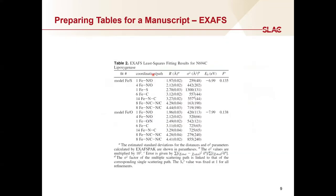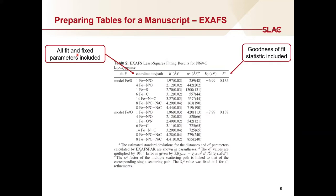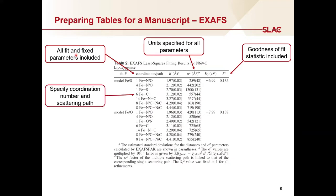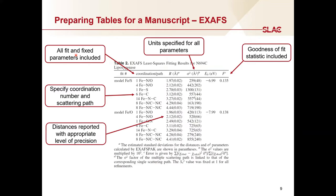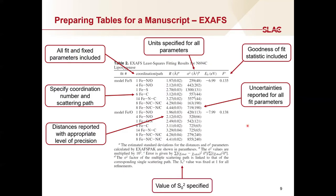To go along with your EXAFS plots, you should include a table of the parameters used to model the data. Your table should include all of the fit and fixed parameters in the model, a goodness of fit statistic, and all parameters should have correct units listed. Both the coordination number and the scattering paths should be specified. Distances are reported with the appropriate level of precision, which is to two decimal points when reporting distances in Angstroms. All fit parameters should have uncertainties reported. Lastly, the value of S0-squared should be stated in the caption.